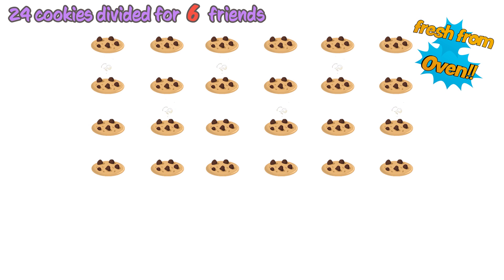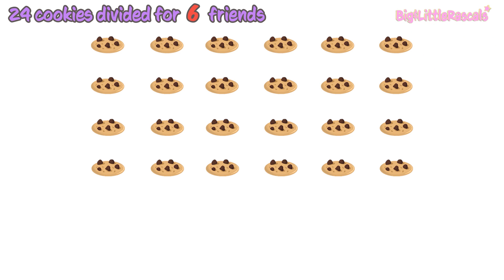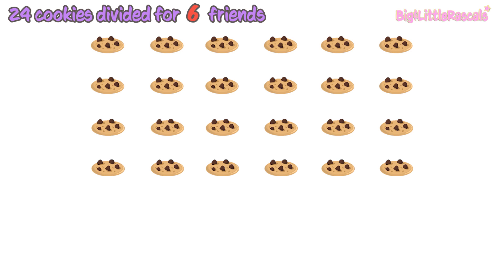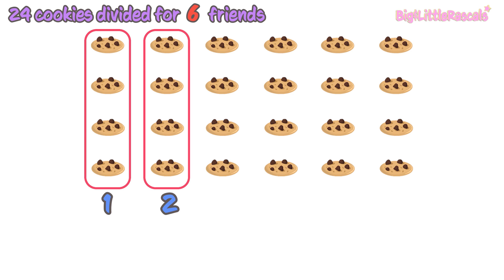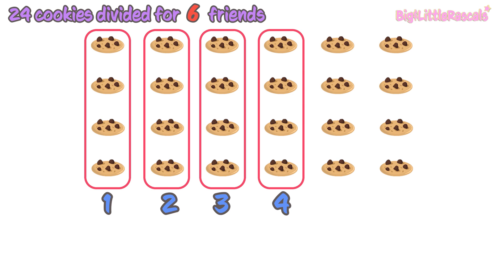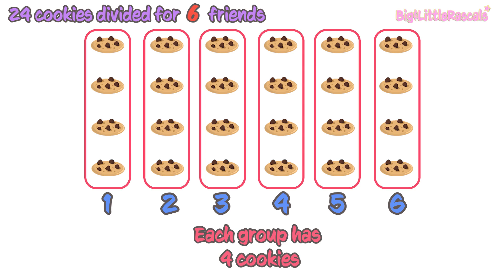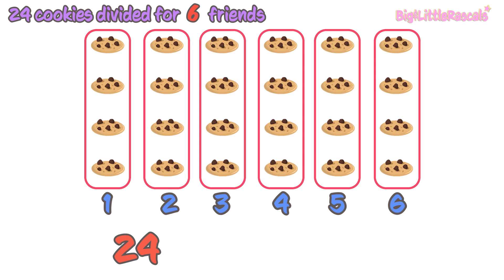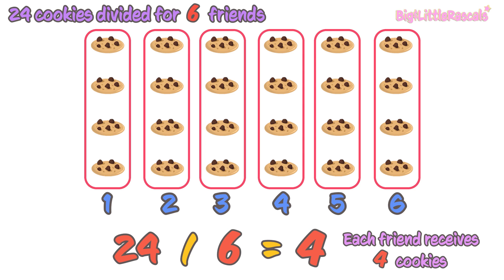Now let's look at some cookies here. There are 24 cookies to be divided among 6 friends. How many cookies will each friend get? First, let's group these cookies into 6 groups equally. 1, 2, 3, 4, 5, 6. Each group has 4 cookies. So 24 divided by 6 is equal to 4. So each friend will get 4 cookies.